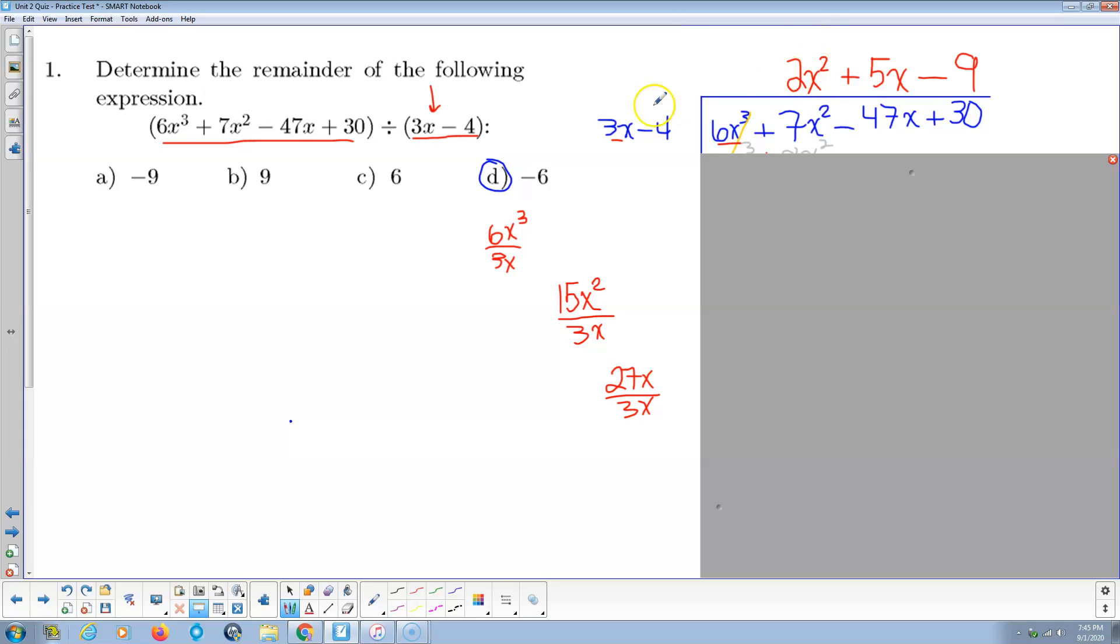We multiply back. 2x² times 3x is 6x³. 2x² times negative 4 is negative - notice in gray - negative 8x². And then we subtract the whole gray thing. That means change the signs, that's in red, and add. There's my equal sign for adding vertically. So the x³ cancel. 7 and 8 make a total of 15x².